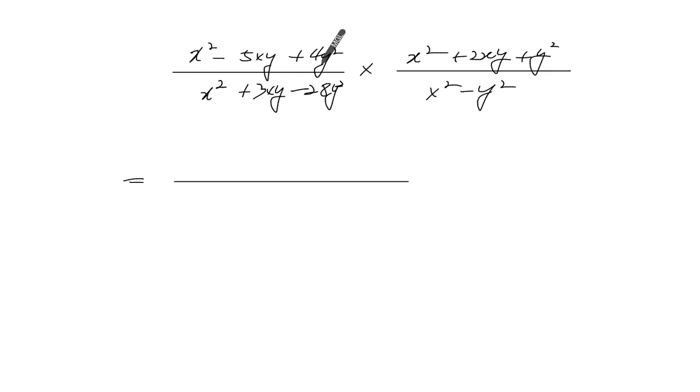It's not in the factor form. Let's factor it first. You get x minus 4y and x minus y on the top, and you get x plus 7y and x minus 4y for the bottom.